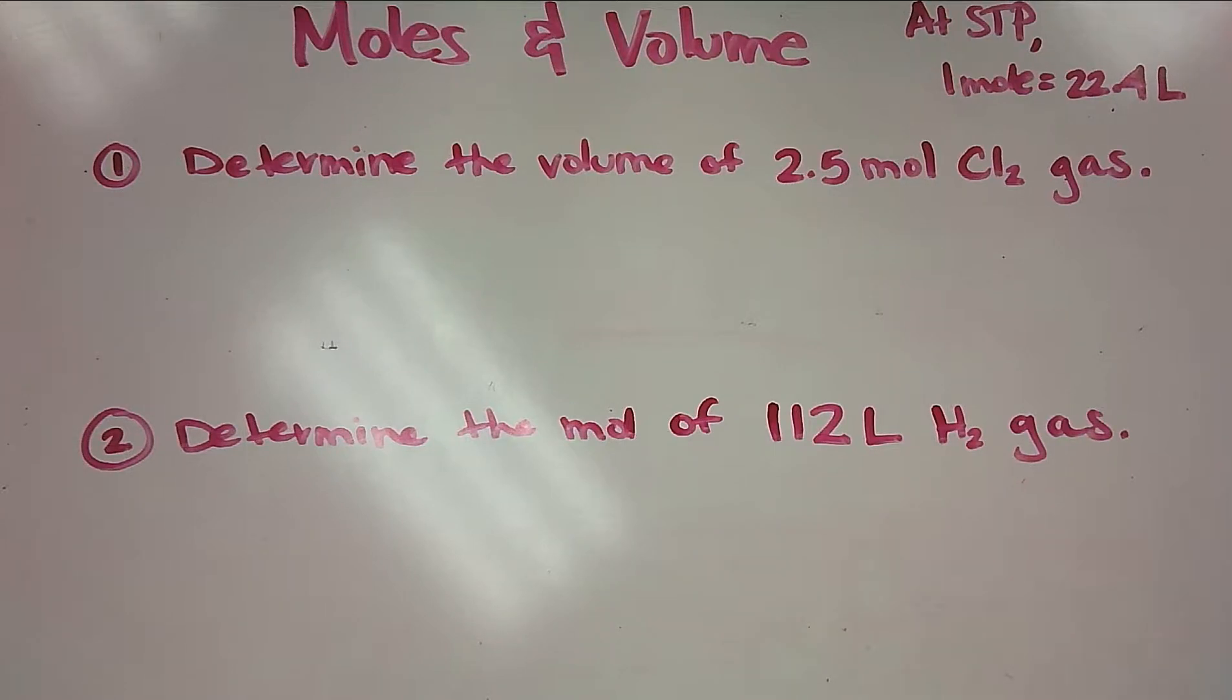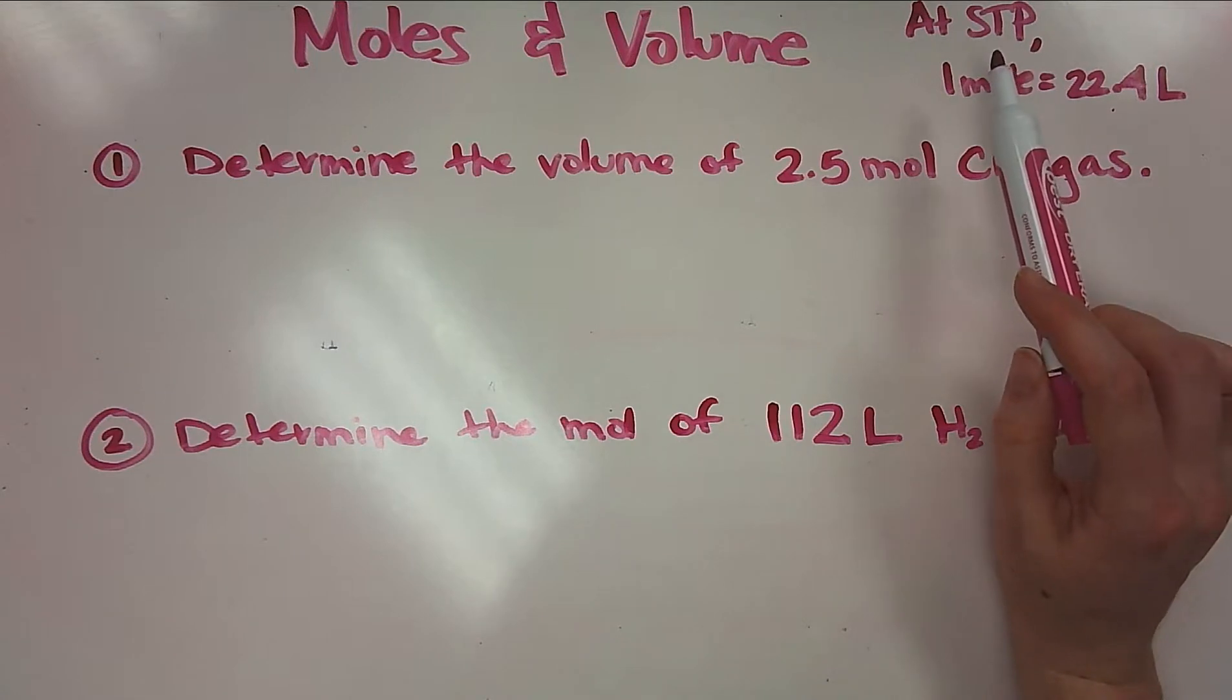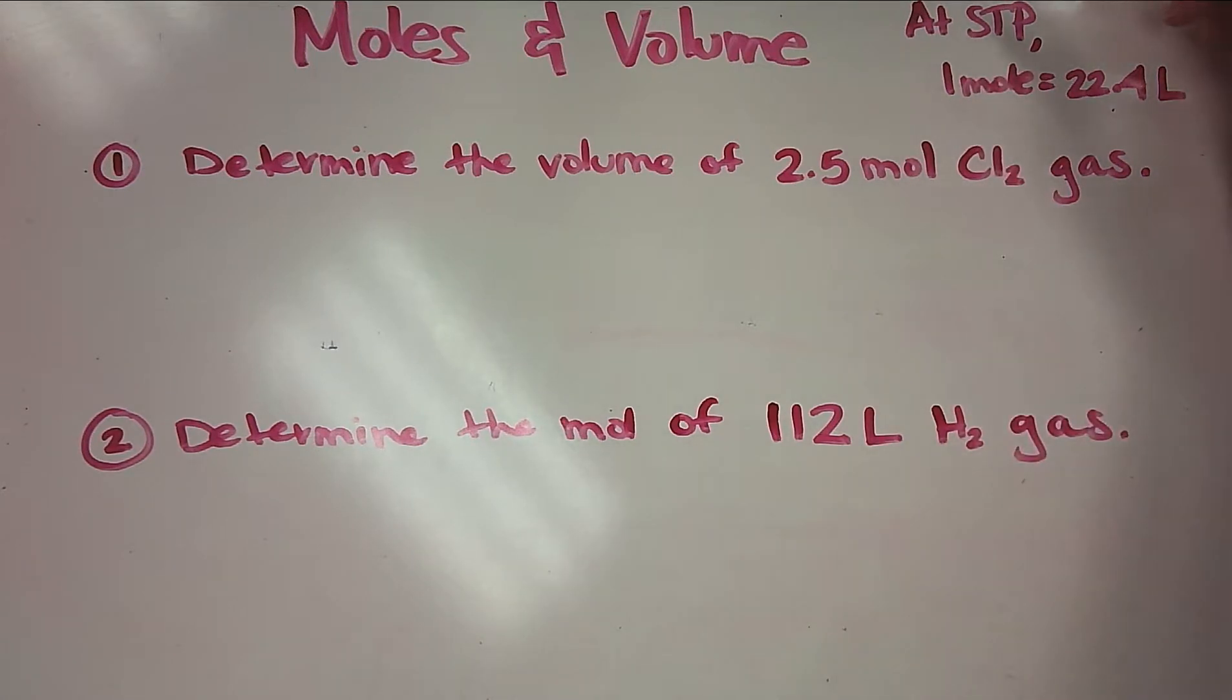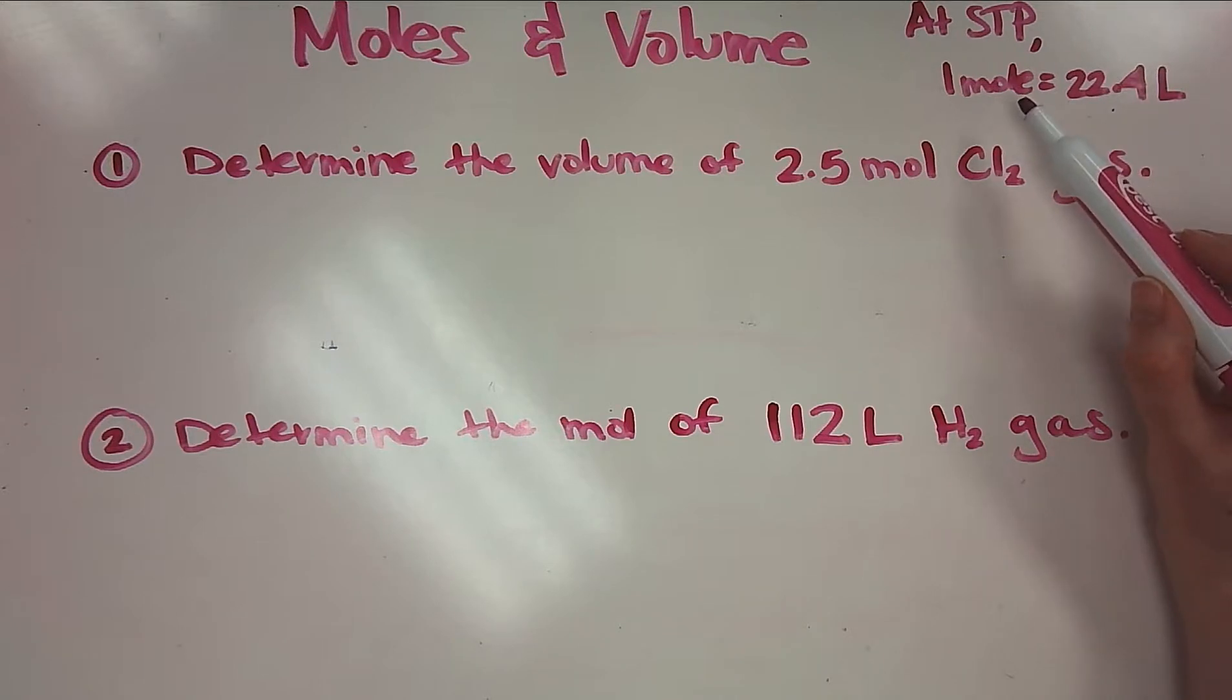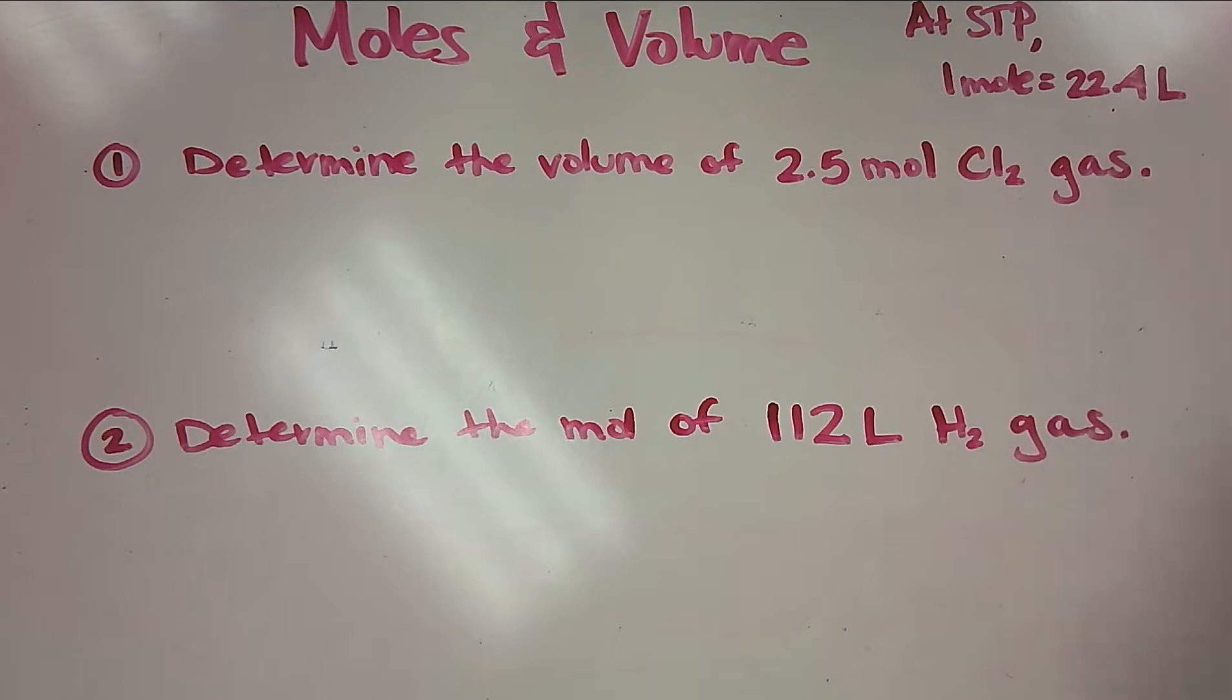Hey chem students, this tutorial is going to focus on moles and volume. We're going to remember that at STP, or standard temperature and pressure—standard temperature being 273 Kelvin, standard pressure being one atmosphere—one mole of a gas will occupy a volume of 22.4 liters.